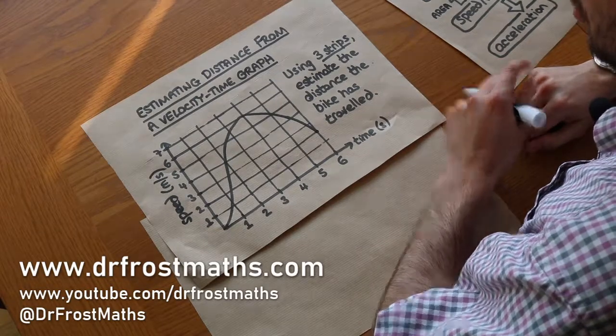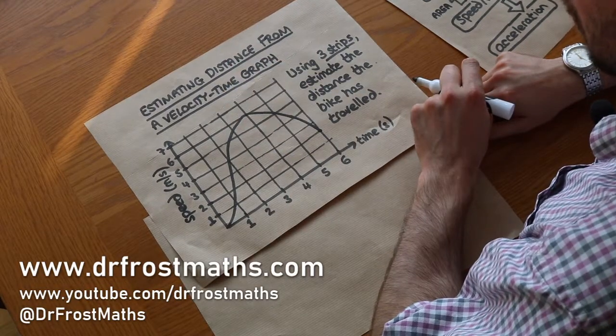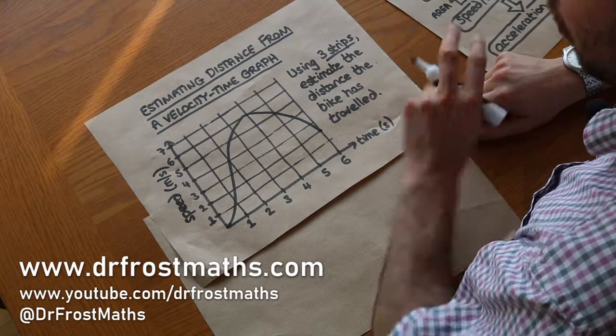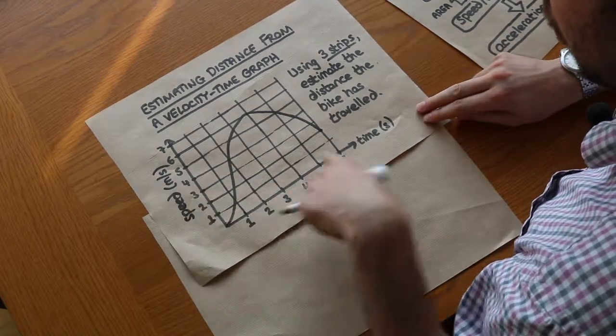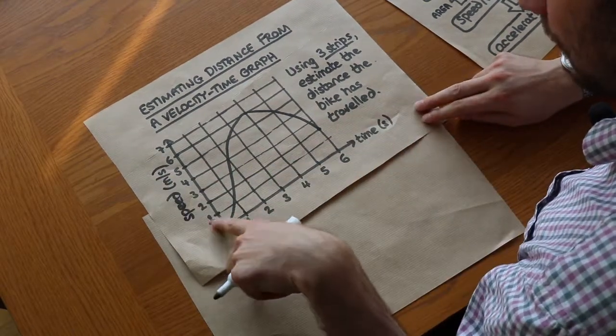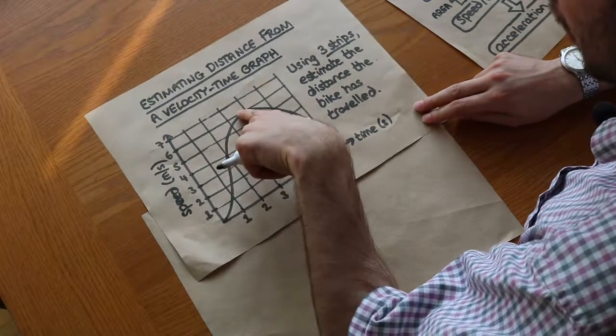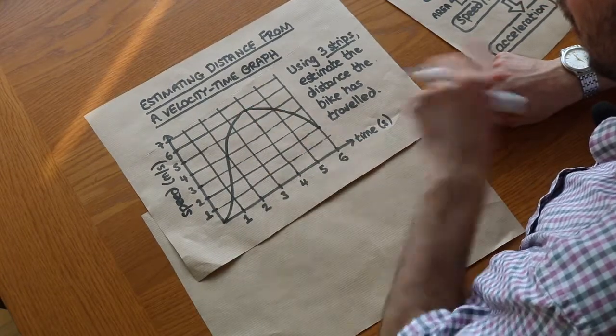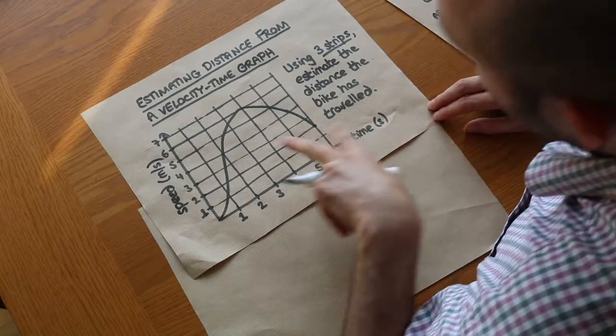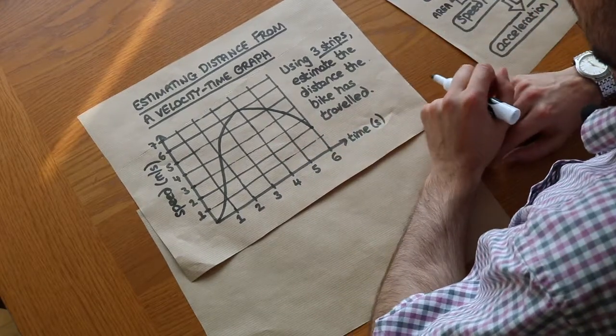Hello and welcome to this Dr Frost Maths video on estimating the distance from a velocity time graph. So we've got a velocity time graph or speed time graph here and we've got a bike that's getting gradually faster and then at this point it starts slowing down like this, and we want to estimate the distance that that bike has traveled.